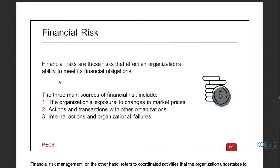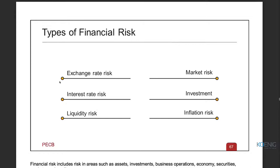Financial risks are those risks that affect an organization's ability to meet its financial obligations. The three main sources include: the organization's exposure to changes in market prices — how much will the organization be impacted if the cost of products and resources changes; actions and transactions with other organizations; and internal actions and organizational failures. Anything with uncertainty around money is categorized as financial risk.